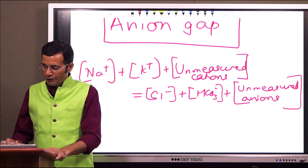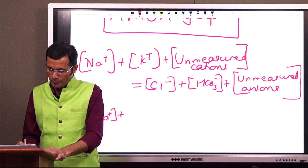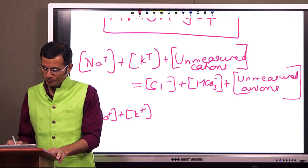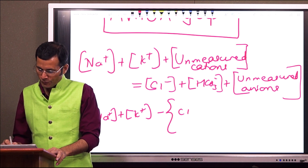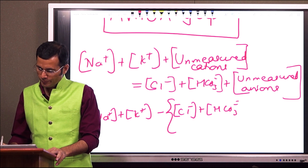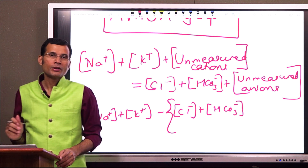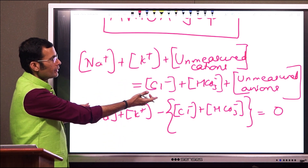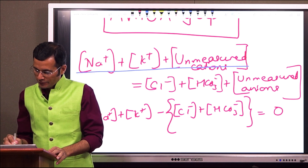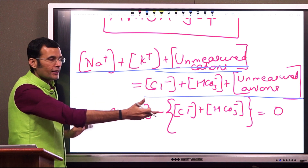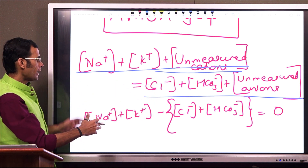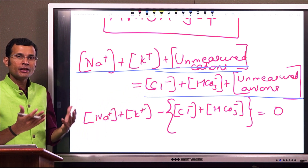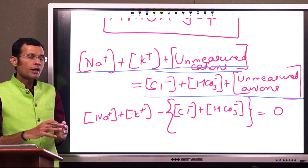If I rearrange the equation — sodium plus potassium minus chloride, bicarbonate, and unmeasured anions — this should equal zero, because cations and anions are equal. But as mentioned, a gap gets created between the number of cations and anions.